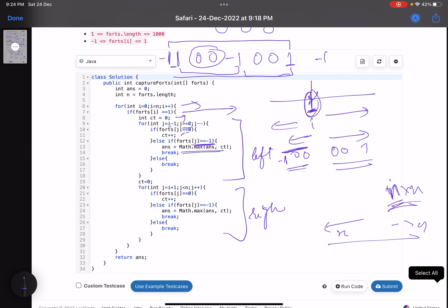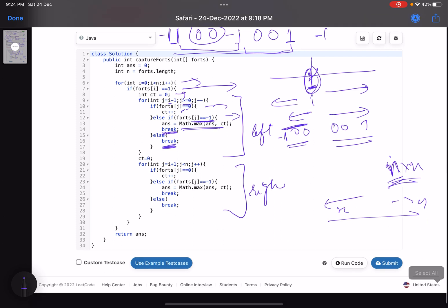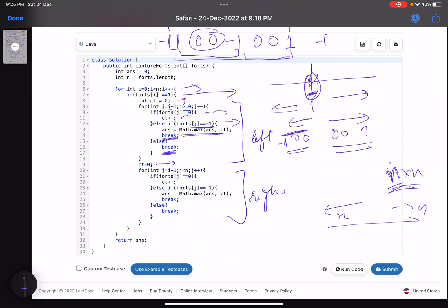You have certain conditions: if the current fort is -1, you update your answer and break your loop because now you don't need to move in the left direction. Also, if you find 1 in your path, that 0 is not there, -1 is not there, 1 is there, just break the loop. No need to do anything.